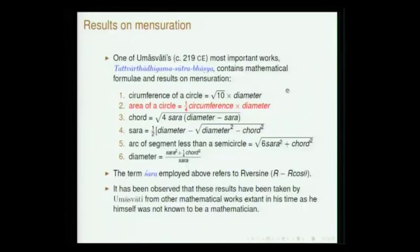Let us come to the Jaina literature and some of the formulae related to mensuration. For instance, they say the circumference of a circle is root 10 times the diameter — even Brahmagrupta uses this value. This is somewhat crude compared to the value specified by Aryabhata, but for practical purposes this is how they have been using it. The area of a circle is one-fourth of circumference times diameter, which is correct, but the value of circumference is not quite accurate.